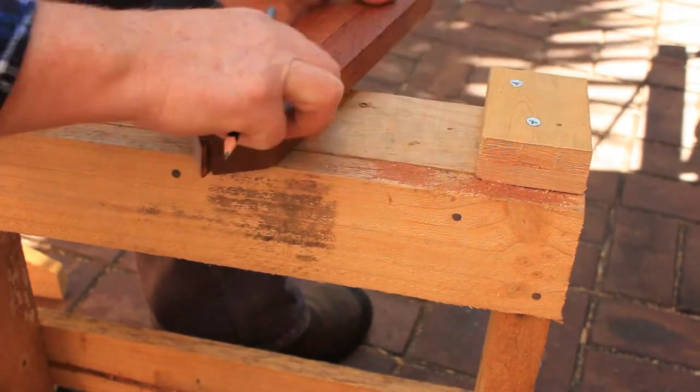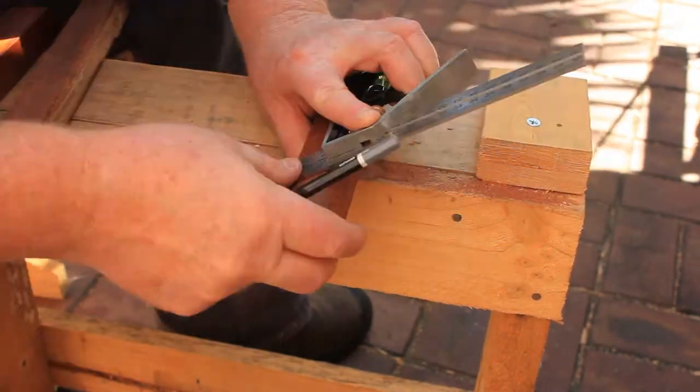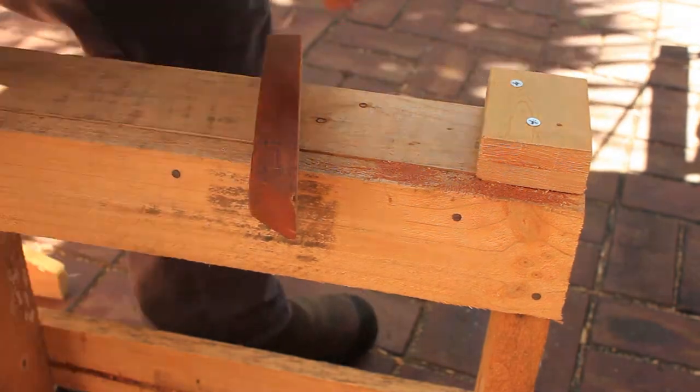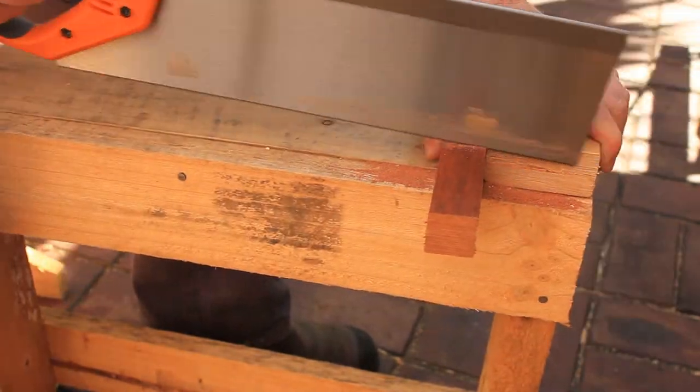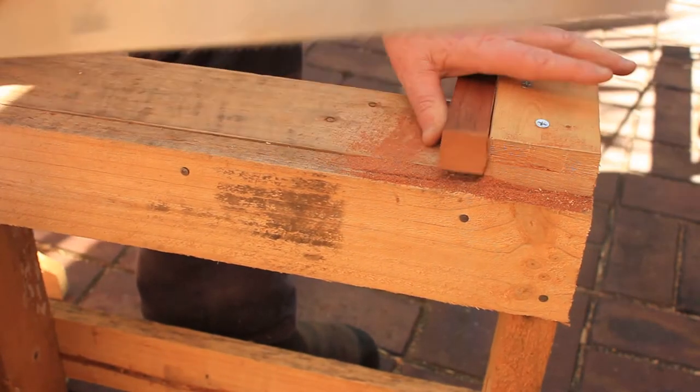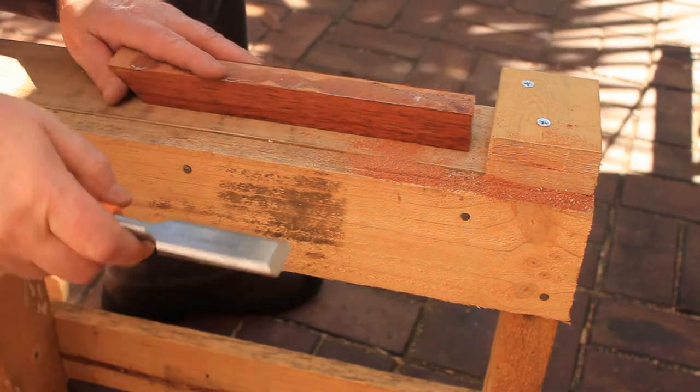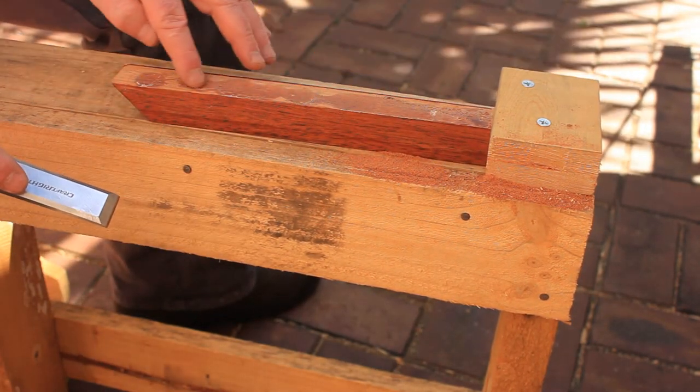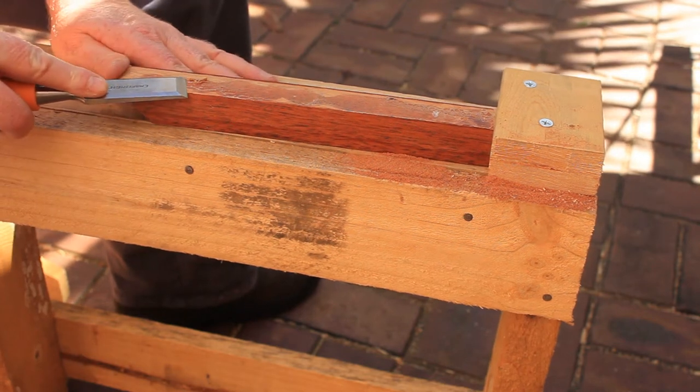Now mark and cut out the clamp jaws and handles from some suitable timber. You can find a link to the free plans for this project in the video description. This wood is salvaged from some old furniture and needs to have the old glue removed.